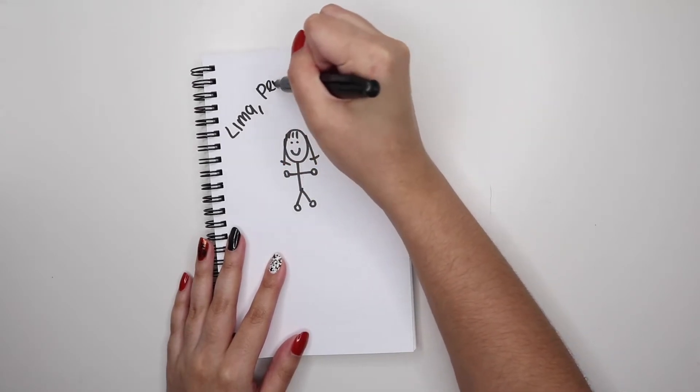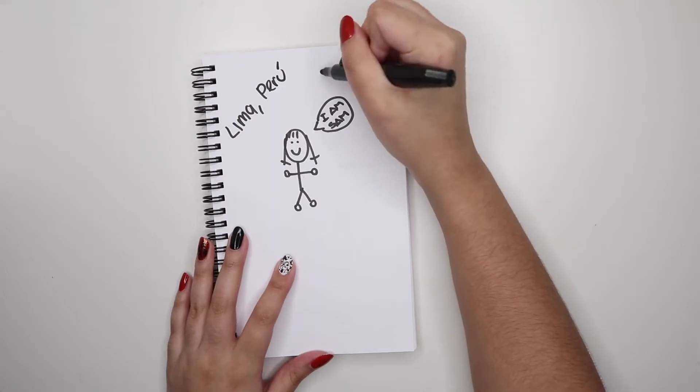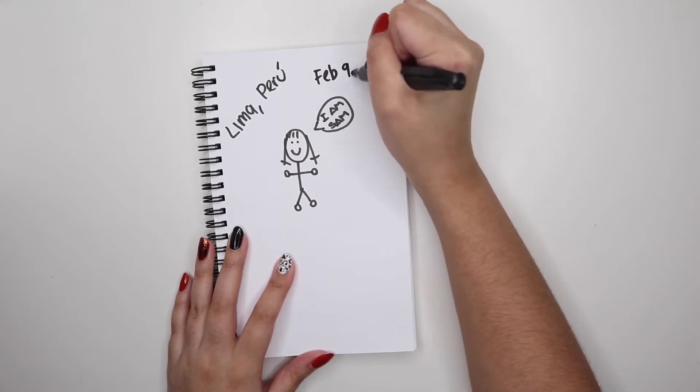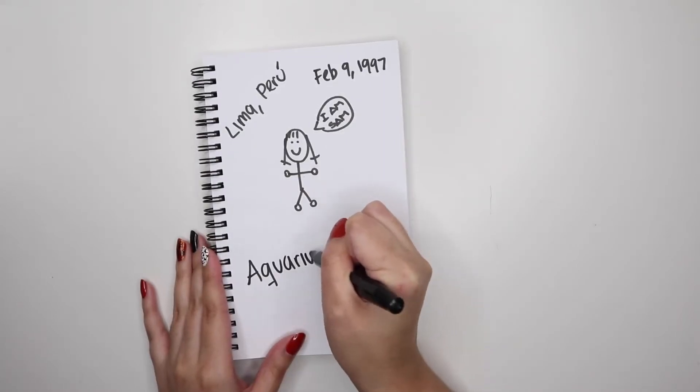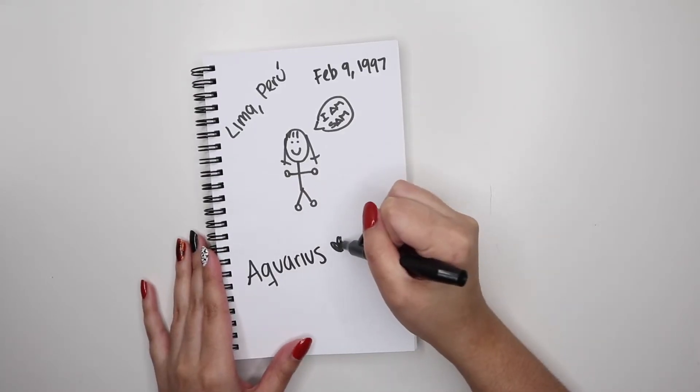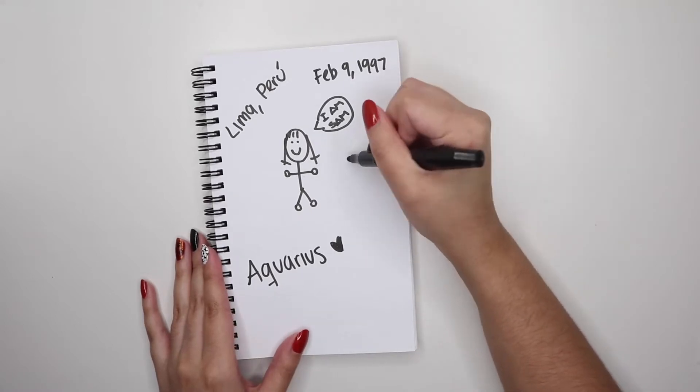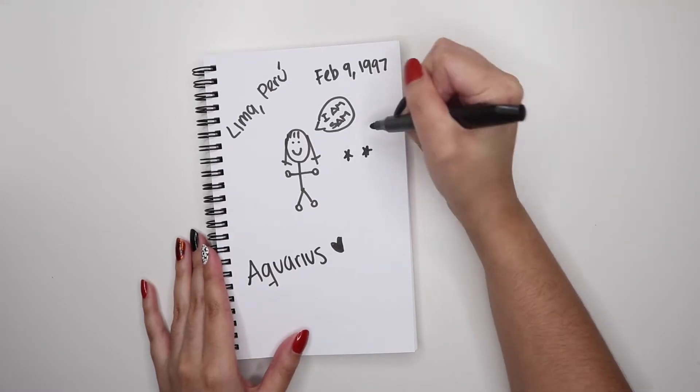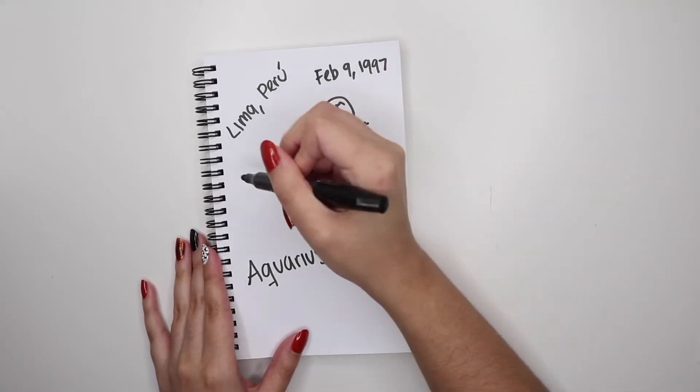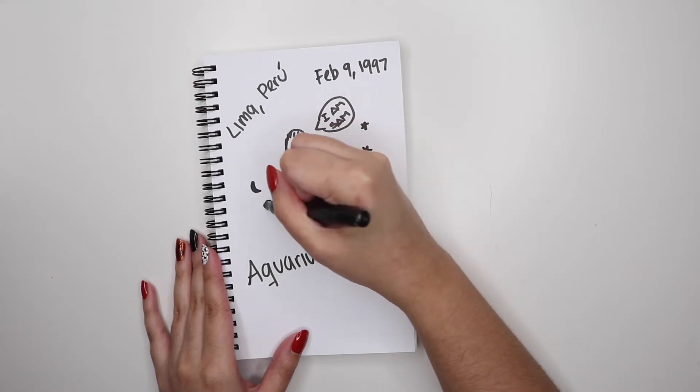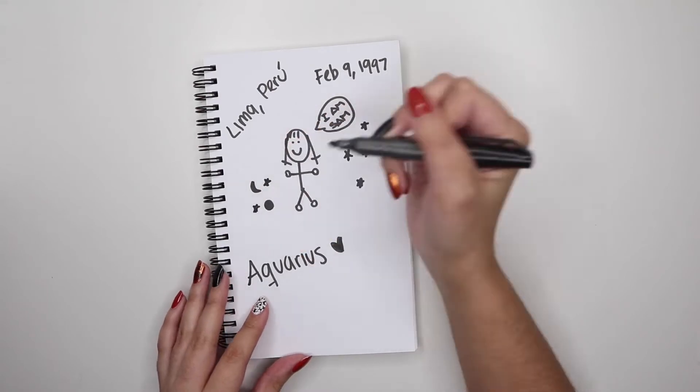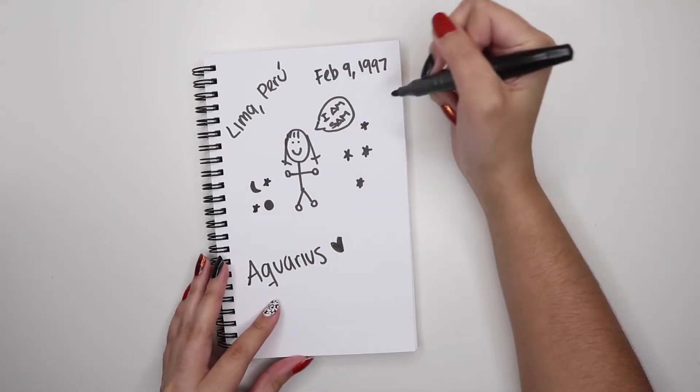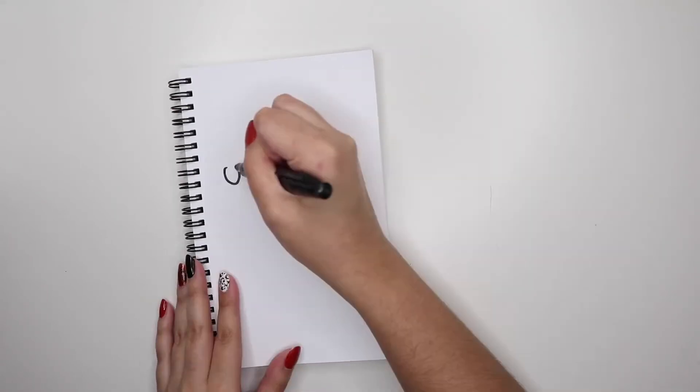I was born in Lima, Peru 22 years ago. My birthday is on February 9th, 1997, which means I'm an Aquarius because I really love astrology. Besides being an Aquarius, I also really love the stars and the moons and just everything that has to do with that.